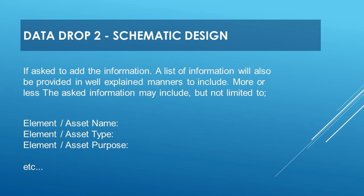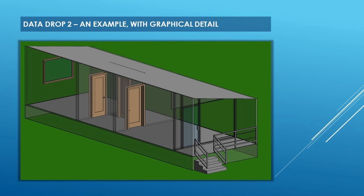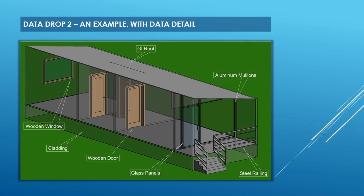If asked to add information, a list of information will also be provided in well-explained manners to include. More or less, the asked information may include but is not limited to: element or asset name, element or asset type, and element or asset purpose. Data Drop 2 — an example with graphical detail, and an example with data detail.